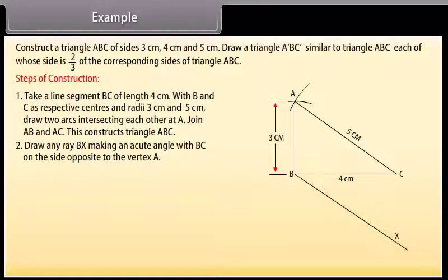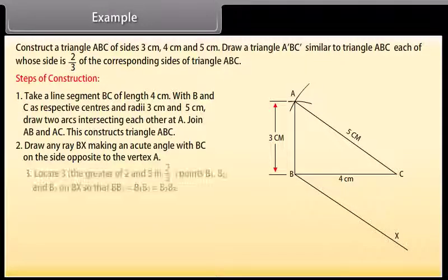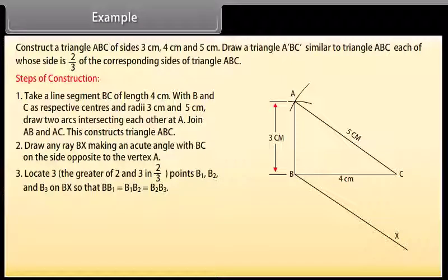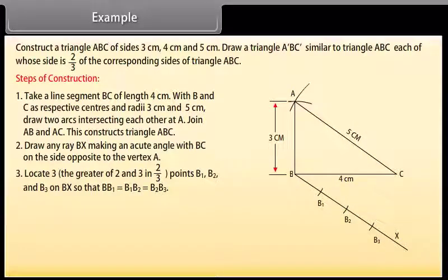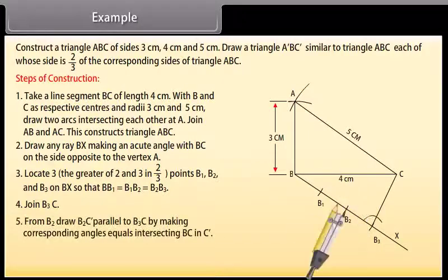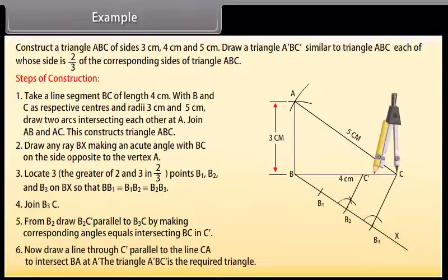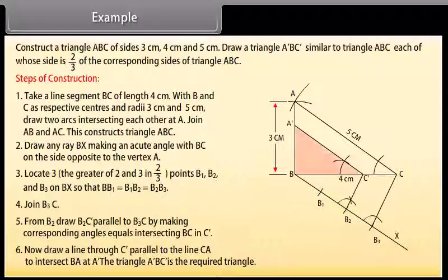Draw any ray BX making an acute angle with BC on the side opposite to the vertex A. Locate 3 points — the greater of 2 and 3 in 2/3 — B1, B2 and B3 on BX so that BB1 = B1B2 = B2B3. Join B3C. From B2, draw B2C' parallel to B3C by making corresponding angles equal, intersecting BC at C'. Now draw a line through C' parallel to the line CA to intersect BA at A'. The triangle A'BC' is the required triangle.